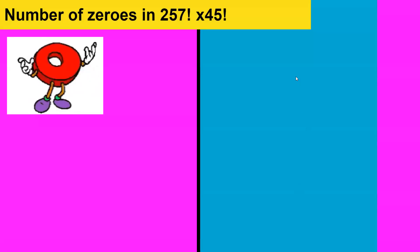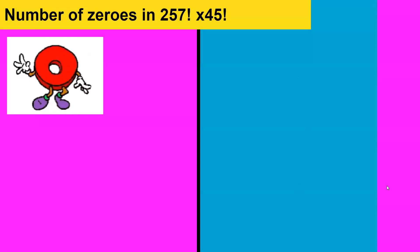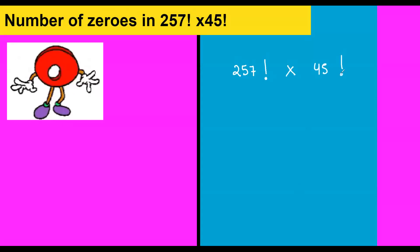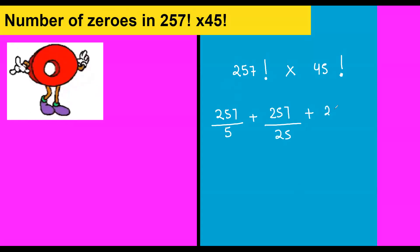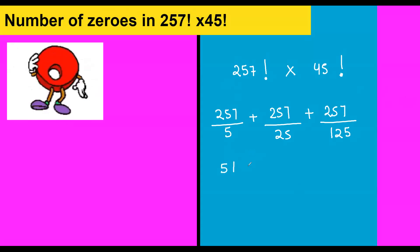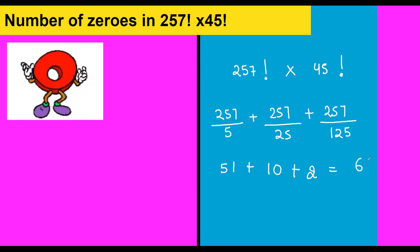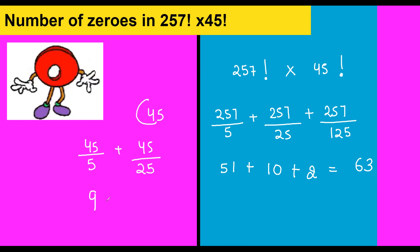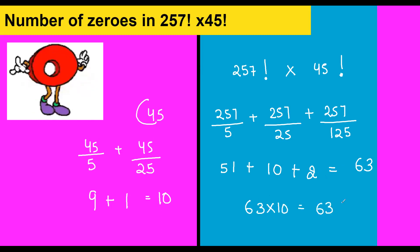Number of zeros in 257 factorial times 45 factorial. We approach each factorial individually. For 257 factorial: 257 ÷ 5 = 51, 257 ÷ 25 = 10, 257 ÷ 125 = 2. Next power 625 is too large. Total: 51 + 10 + 2 = 63. For 45 factorial: 45 ÷ 5 = 9, 45 ÷ 25 = 1. Next 125 is too large. Total: 9 + 1 = 10. So the combined total is 63 + 10 = 630 trailing zeros.